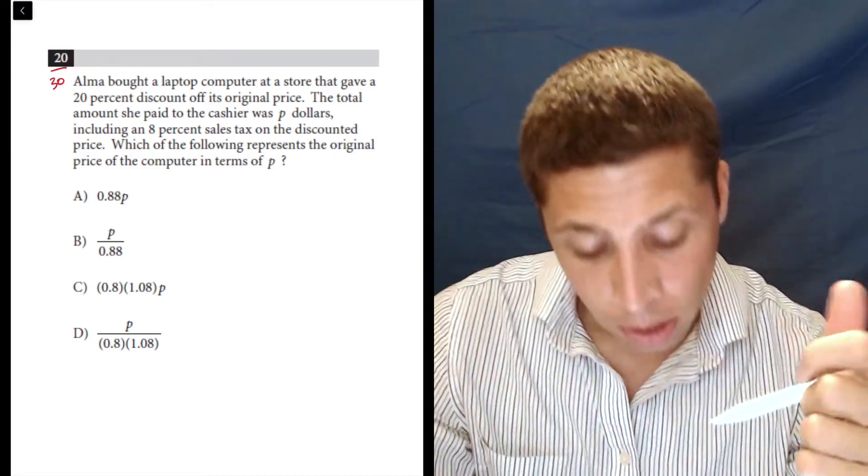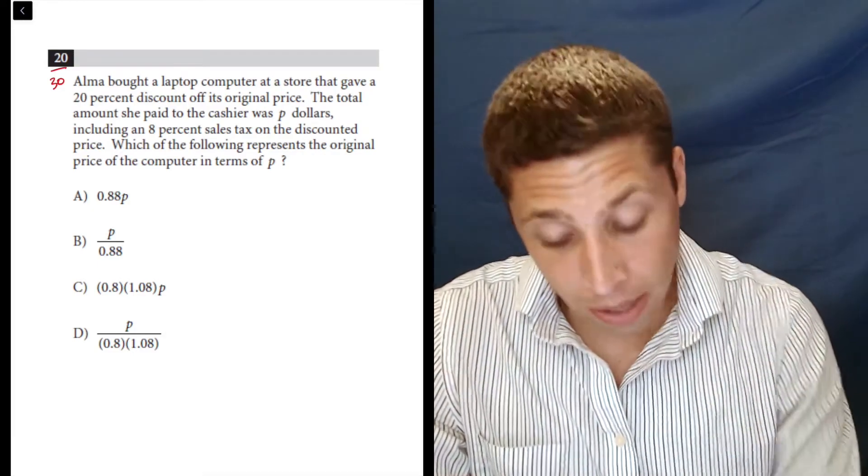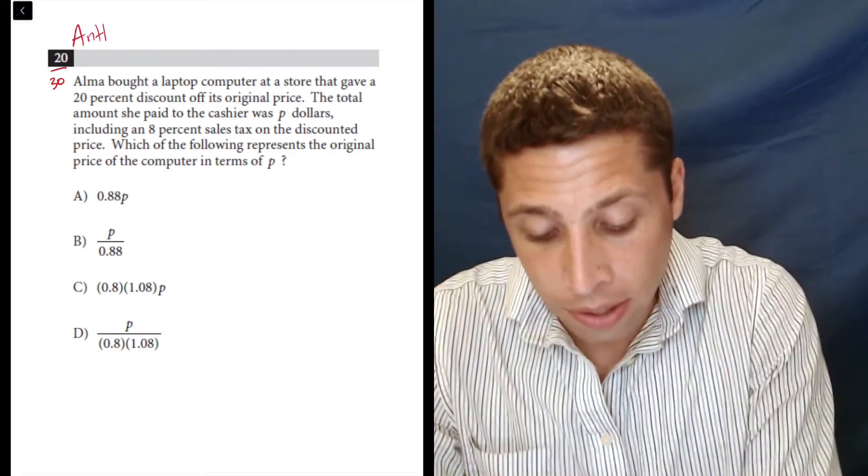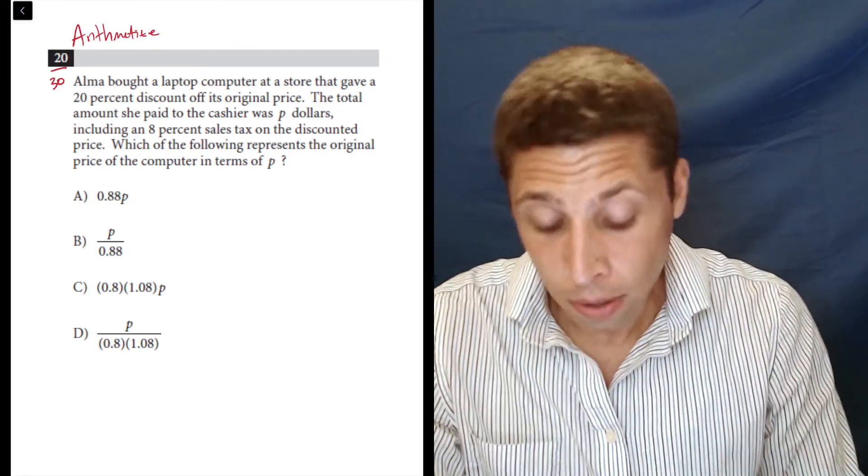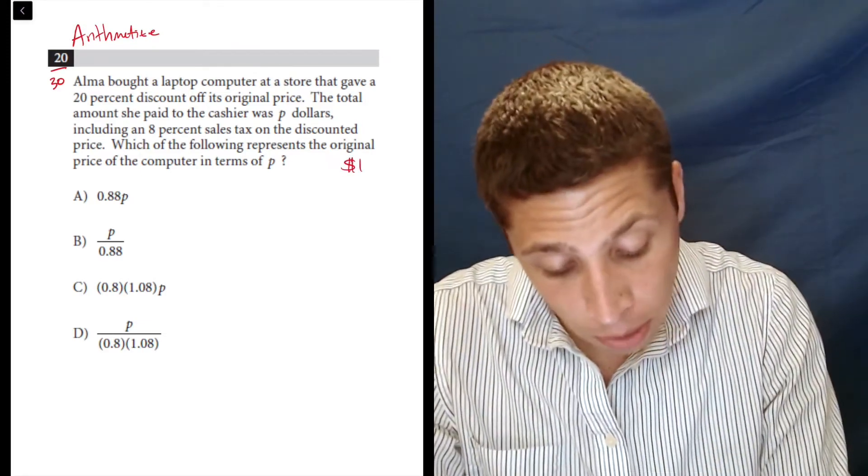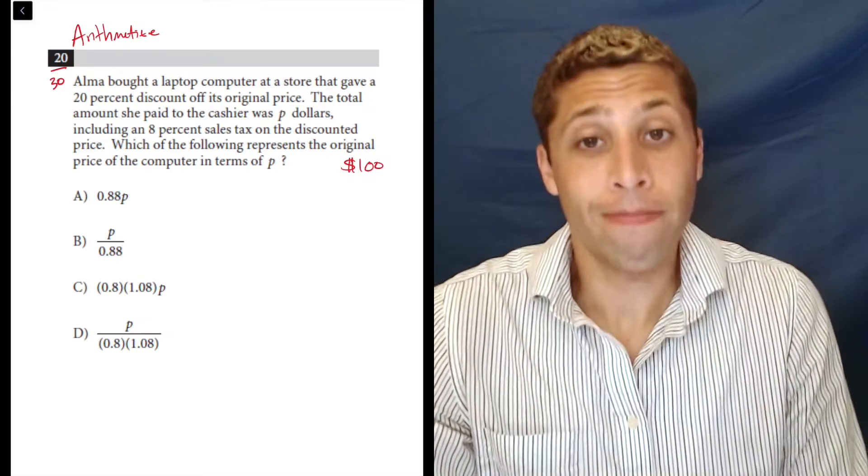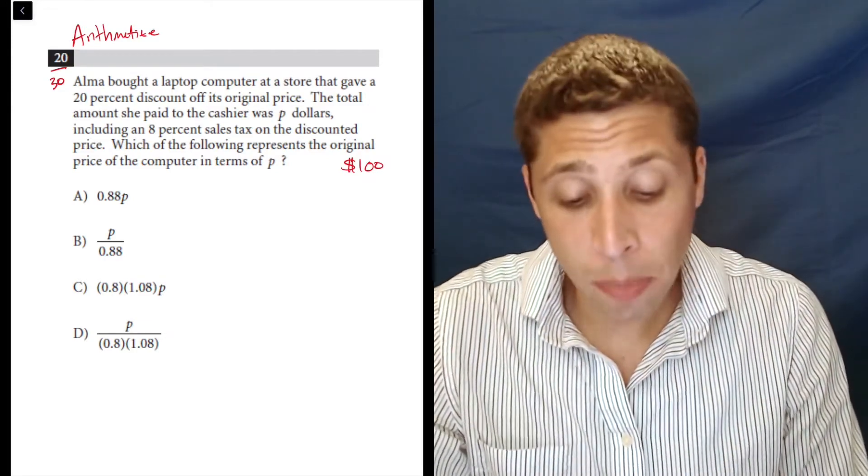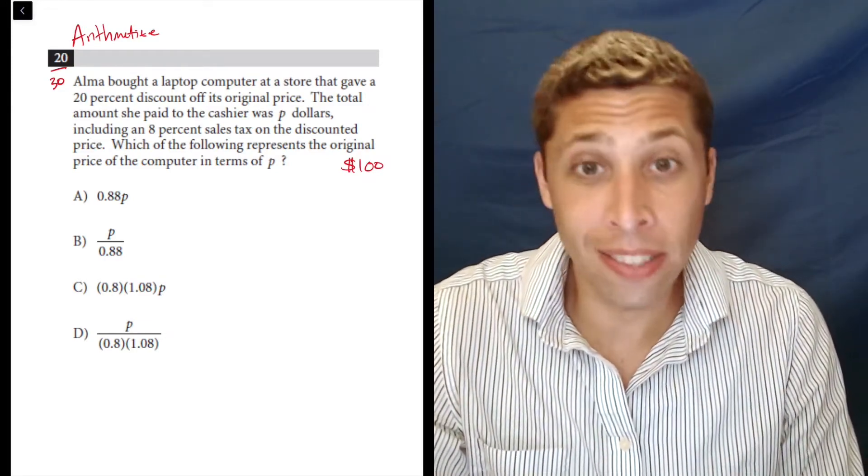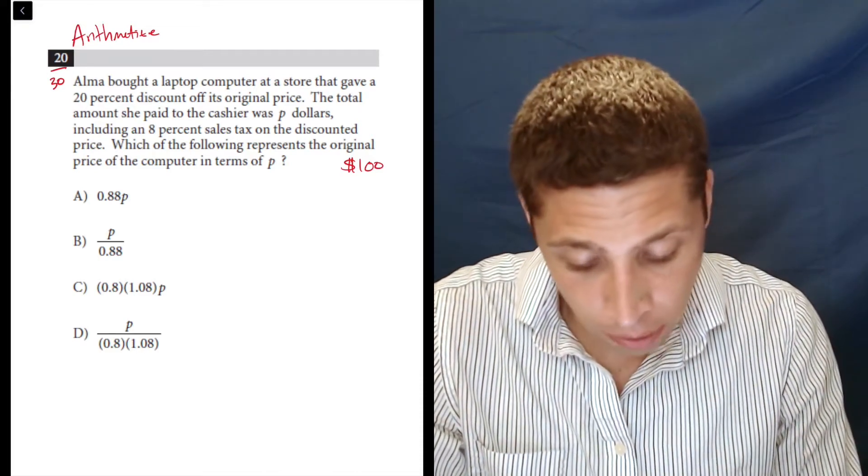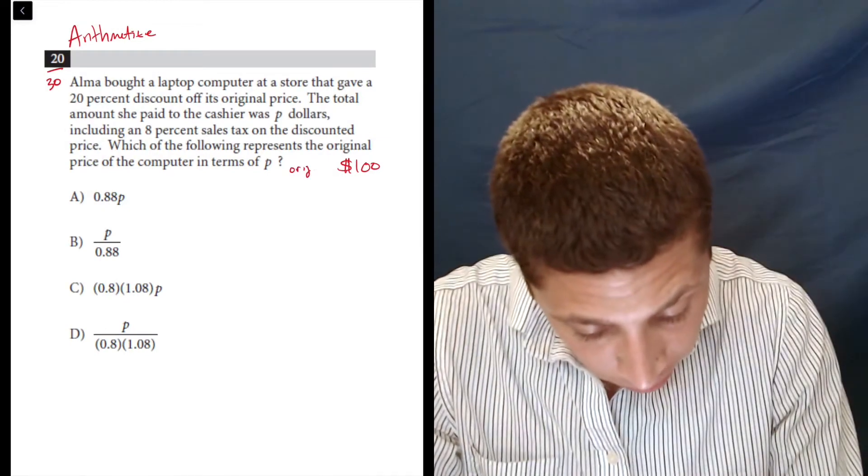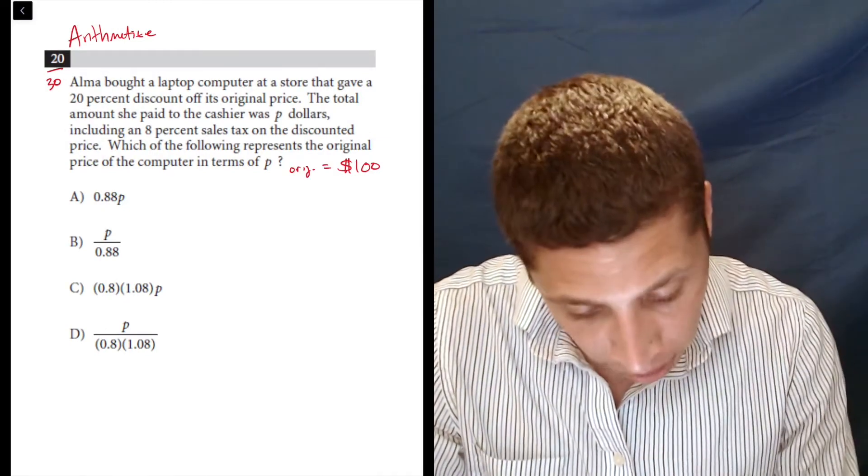So okay, how should I pick numbers here? How should I arithmetize to better understand the story? Well, let's just say that the original laptop was a hundred dollars. It's an easy number and especially with percentages, it's kind of easy to follow because the multiplication is easy with a hundred. So let's just follow the instructions. So this is my original. Then what happens?